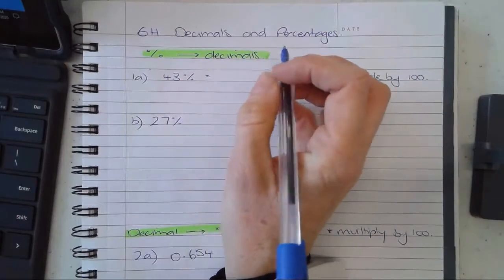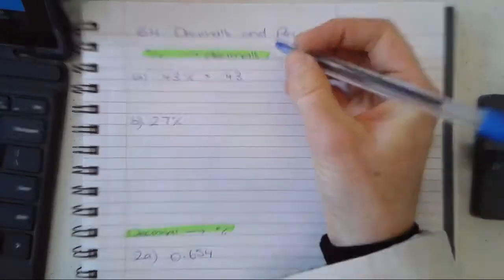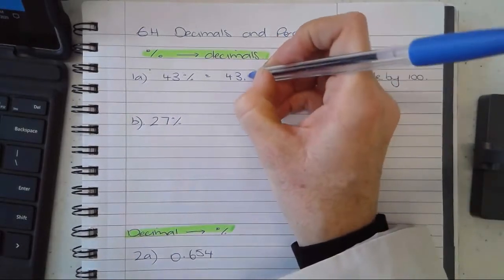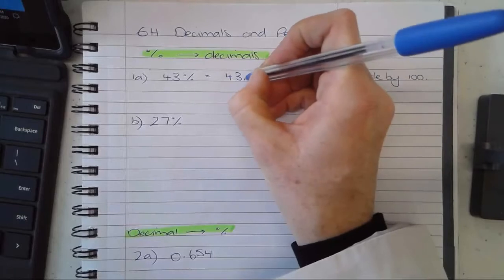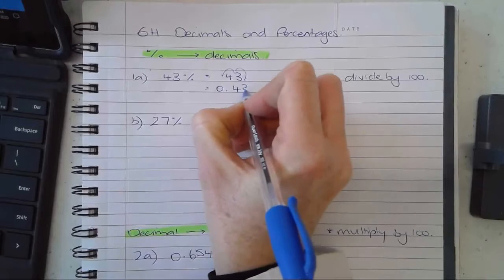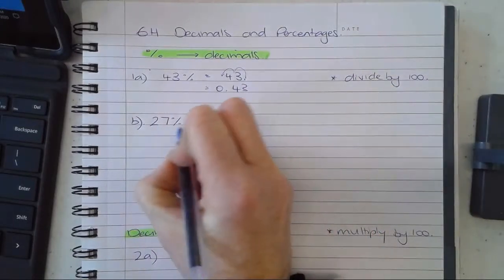Once you get the hang of these, it's super easy. Let's say my number is 43%. That's a whole number, so my decimal point will be at the end. If I'm dividing by 100, I'm going to go 1, 2, and that's 0.43. Now down here I've got 27%.